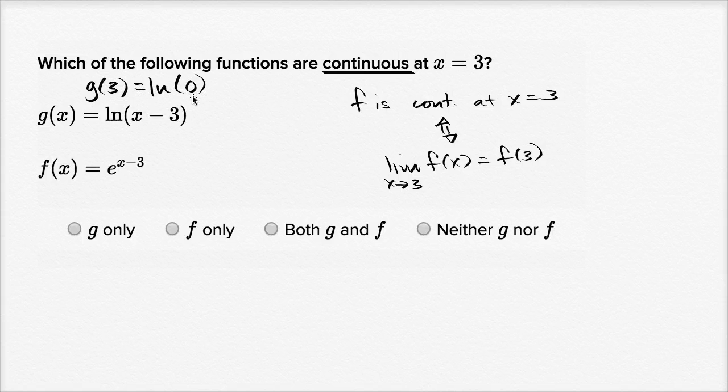You can't raise e to any power to get to zero. You could say negative infinity, but this is not defined. And so if this isn't even defined at x equals three, there's no way that it's going to be continuous at x equals three. So we could rule this one out.